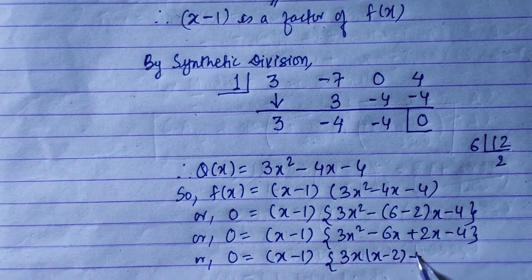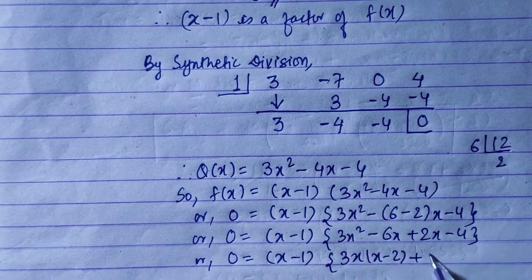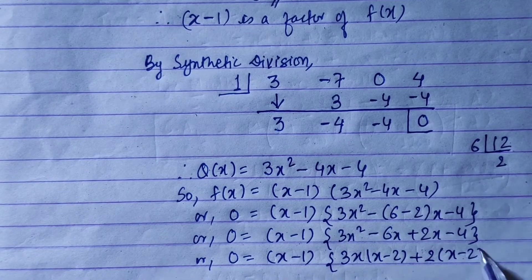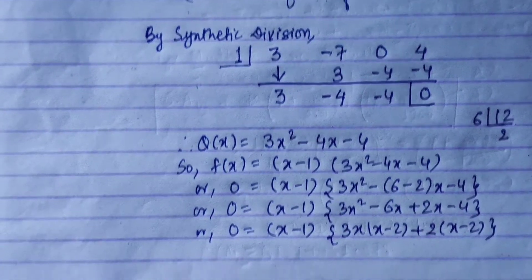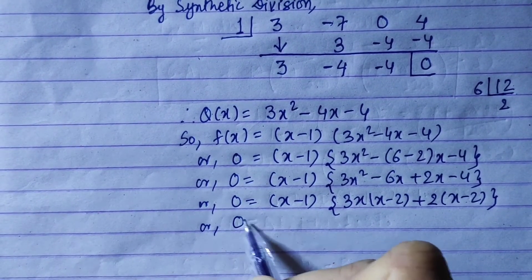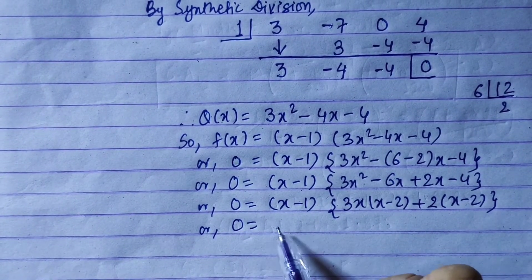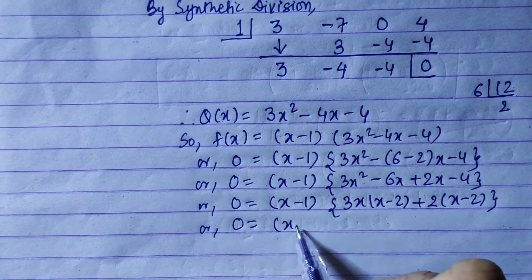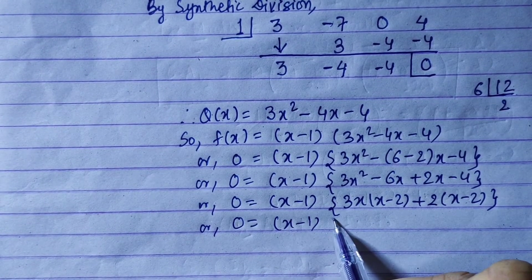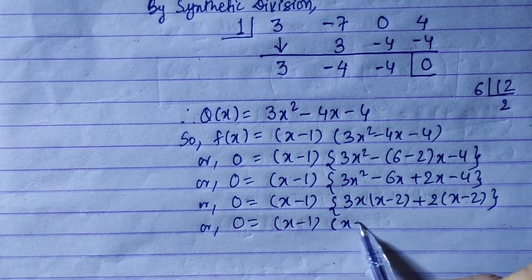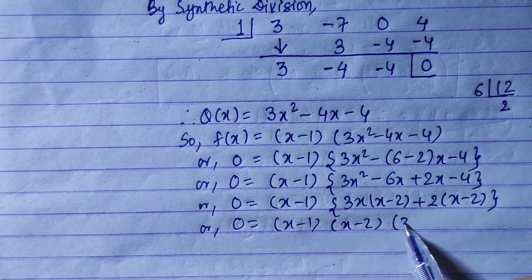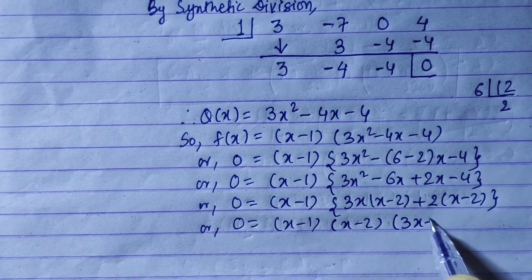So 0 = (x - 1)(x - 2)(3x + 2). Setting each factor to zero: x - 1 = 0, or x - 2 = 0, or 3x + 2 = 0.